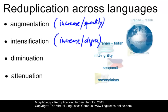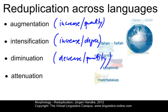The two categories of increase can be contrasted with decrease. It is quite difficult to find examples of decrease of quantity across languages. However, here is an example from Indonesian: 'anak' means 'child', and 'anak-anak' means the small child — in other words, the baby. So that would be diminution.